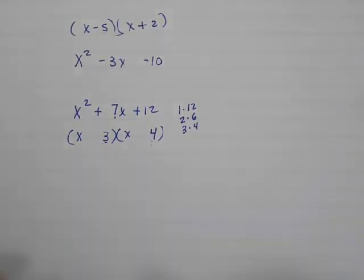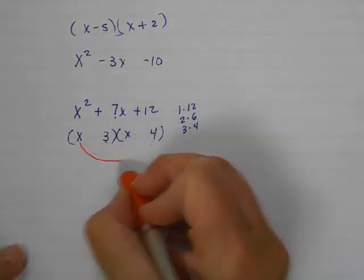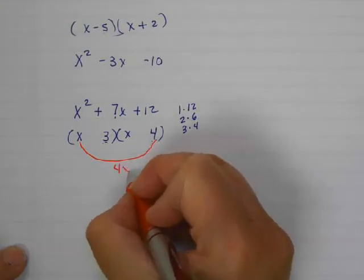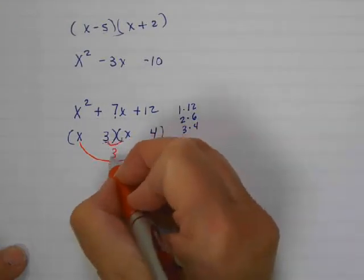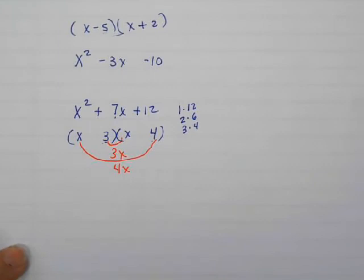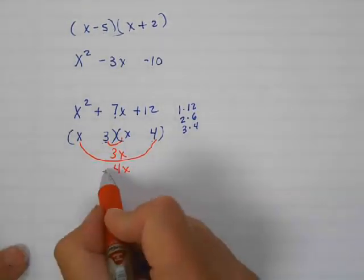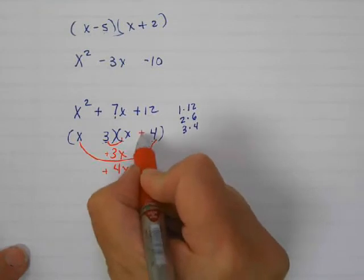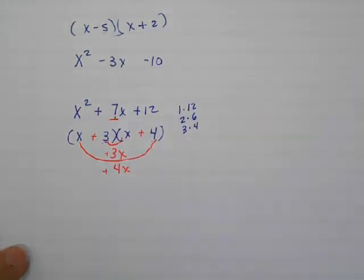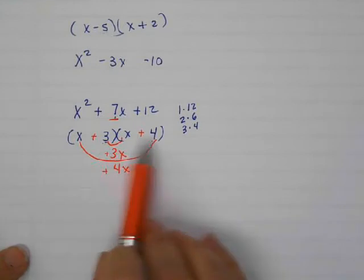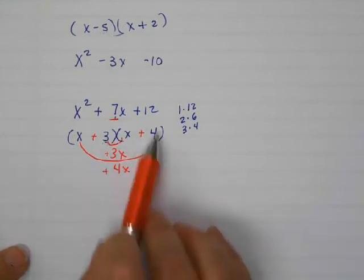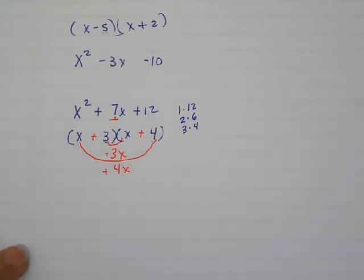I'm going to pick 3 and 4. And I want you to check your work here. When I do this outside and this inside together, is there a way that 3x and 4x could give me 7x? And there is. A positive 4 and a positive 3 would give me positive 7, so I know I picked the right numbers. 3 plus 4 is 7. 3 times 4 is 12. So this one's factored.